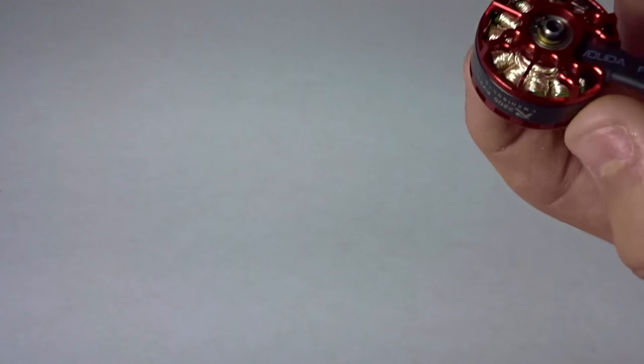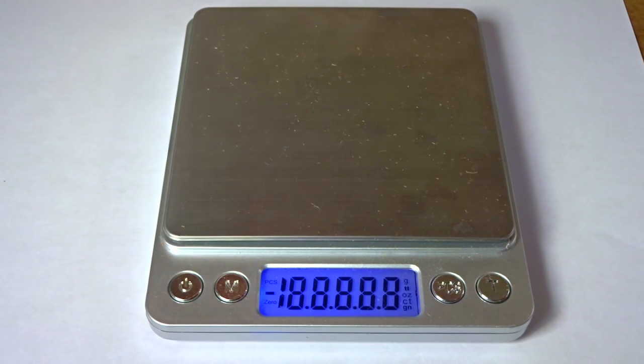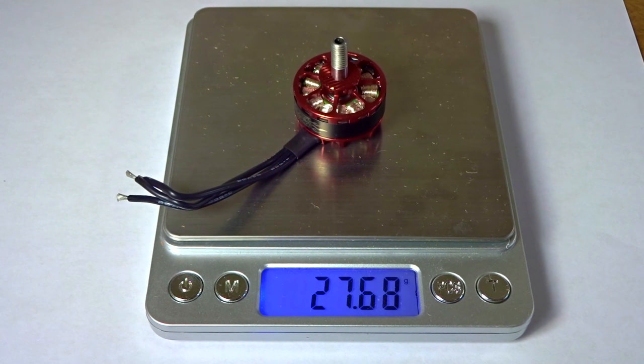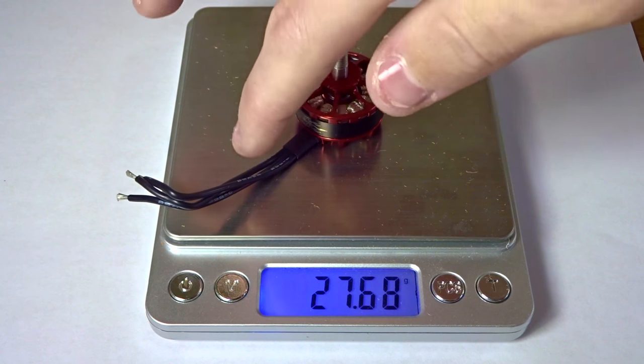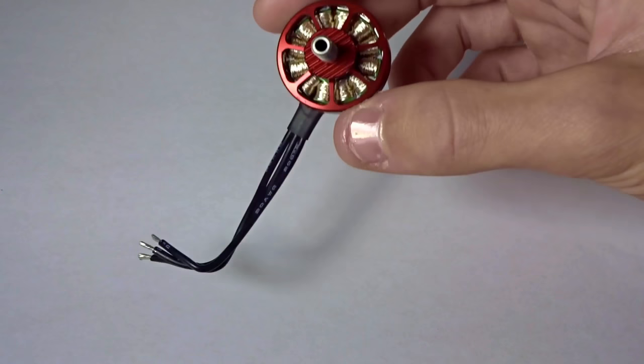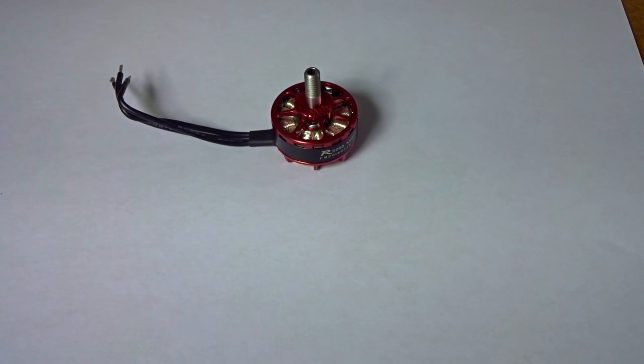If you're looking for a super durable motor, I wouldn't choose these, maybe the non-light editions. Now let me weigh this. The 2205 2480 KV comes out to 27.68 grams. Once you trim the wires down, it'll probably be about 27 grams, which will help in flight to get faster response times and more torque.